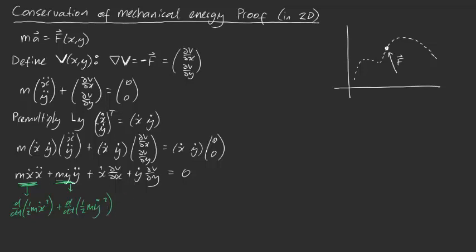And likewise, this expression just here is actually, if you think about it, this is dV dt, using the multivariable chain rule. Notice V is a function of x and y, so using the multivariable chain rule, you will get exactly this. Amazingly. And that is equal to zero.